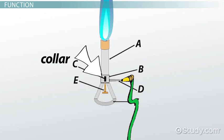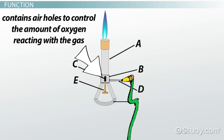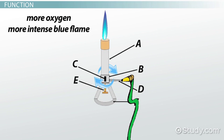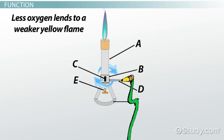The collar at the base of the barrel contains air holes to control the amount of oxygen reacting with the gas. The collar can be rotated to adjust oxygen intake. In general, the more oxygen present, the more intense and blue the flame will be. Less oxygen lends to a weaker yellow flame.